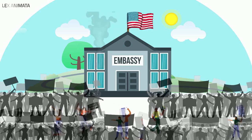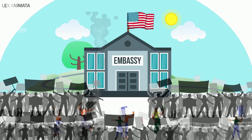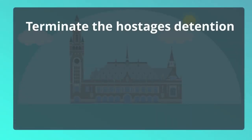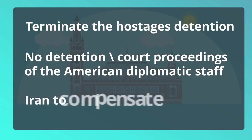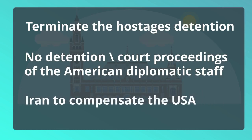The court found that the militants became agents of the state, which itself became responsible for their acts. Iran must terminate the unlawful detention of the hostages, ensure that they can leave Iran, and return the embassy's premises. No member of the American diplomatic staff may be detained in Iran, subjected to judicial proceedings, or required to participate in them as a witness. Iran must also compensate the United States.